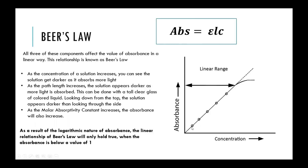However, this linear relationship only holds up to an absorbance of one. Remember, absorbance and transmittance are logarithmically related. That means that after an absorbance of one, it starts to taper off in a logarithmic way and is no longer linear. So when relating absorbance and concentration, you need to make sure that any absorbance value is below a value of one.